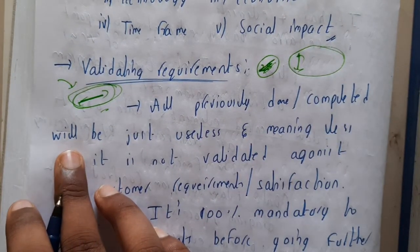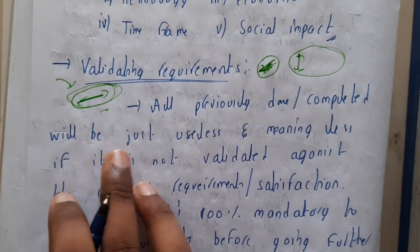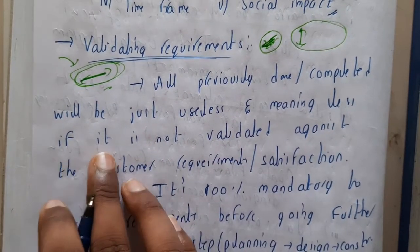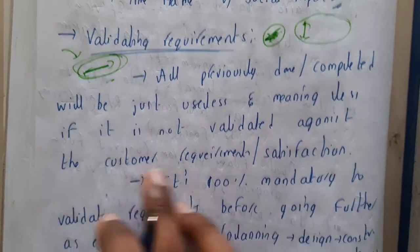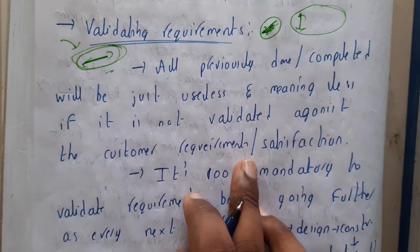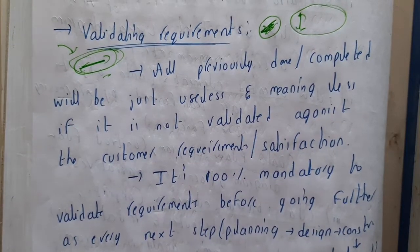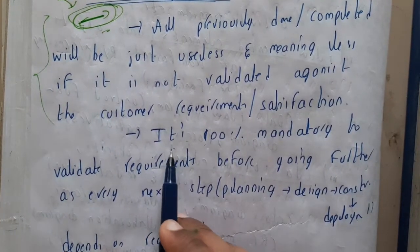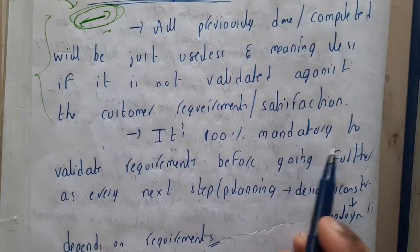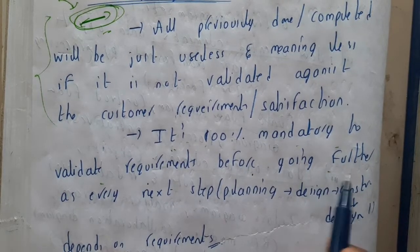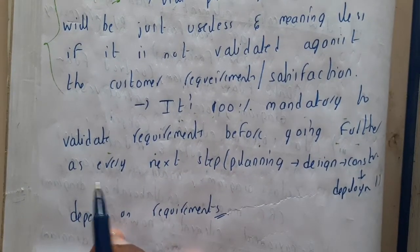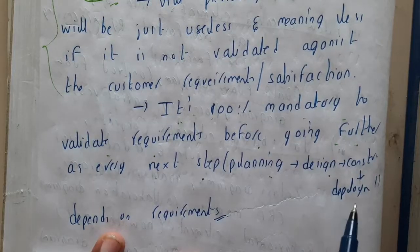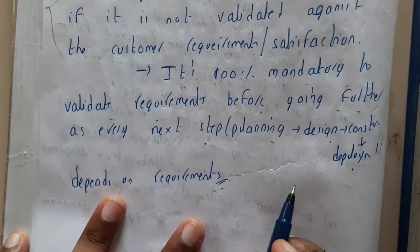All previously done steps will be useless and meaningless if not validated against the customer requirements or satisfaction. It is 100% mandatory to validate the requirements before going further, as every next step — planning, designing, construction, and deployment — depends on the requirements.